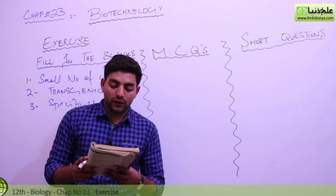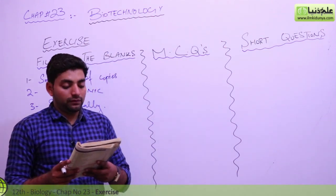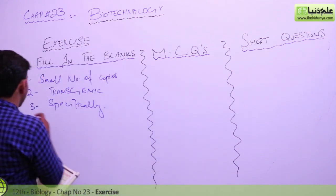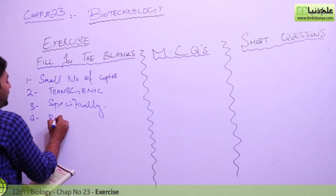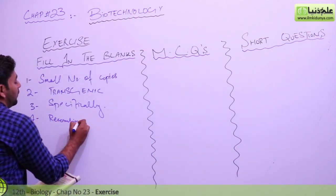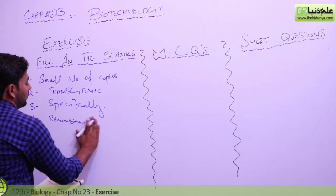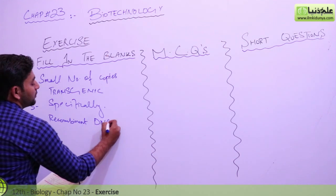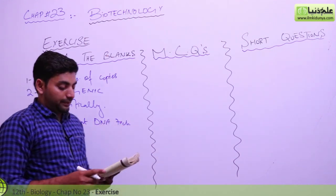Dash production of many identical copies of a gene - recombinant DNA technology produces identical copies of a gene. So the answer of question number four is recombinant DNA technology.